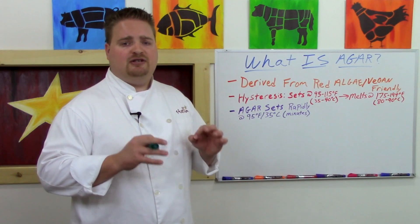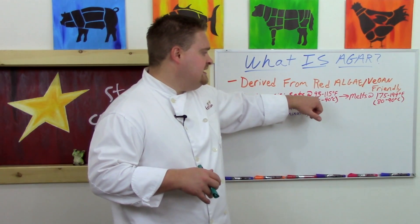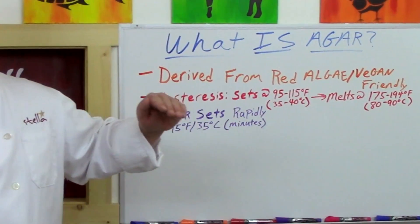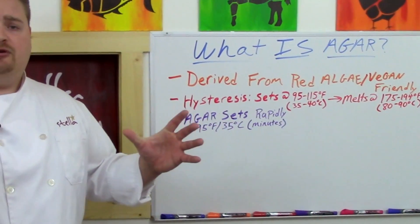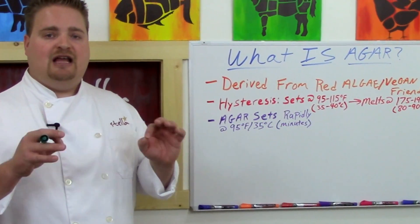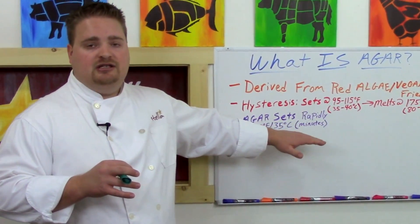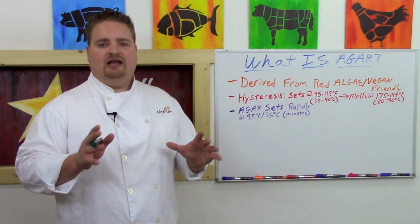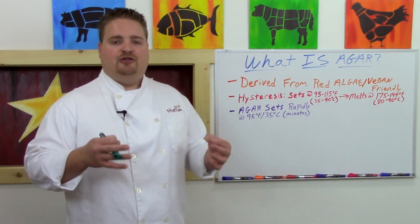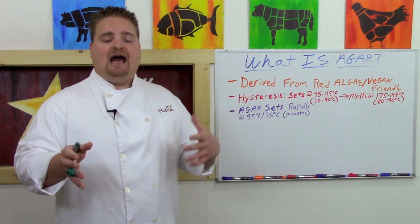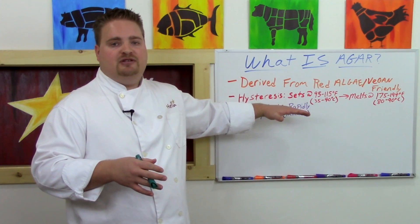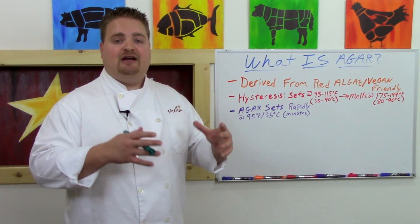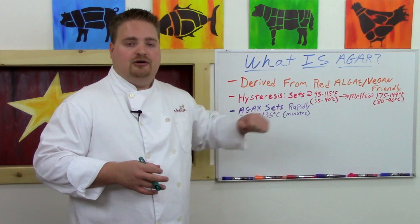Agar sets rapidly at core temperature, making it very convenient when you need a gel that sets up and you don't have 24 hours to wait. Also, its setting temperature of 95 degrees Fahrenheit and 35 degrees Celsius is way above normal average room temperature. So if you need a room-temperature-stable gel — say you're making a gelatin dessert for 300 people in martini glasses but don't have refrigerator space — you can use agar, let them set out at room temperature, and they'll set up as they cool below 95 degrees Fahrenheit.